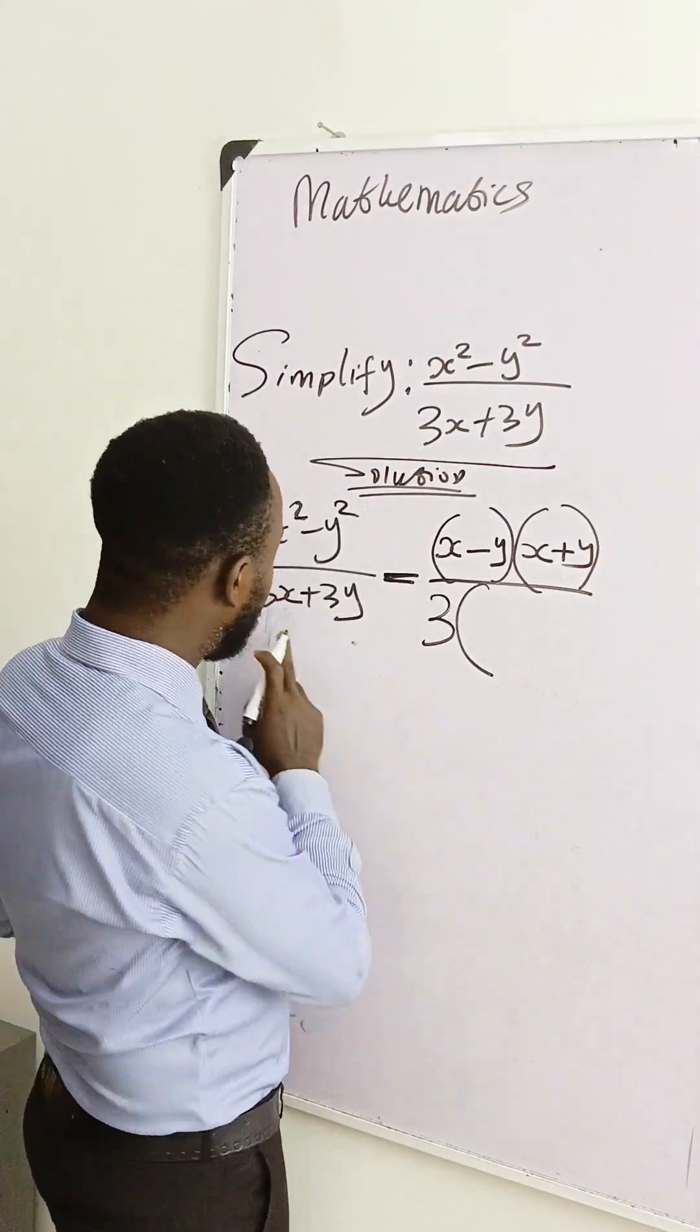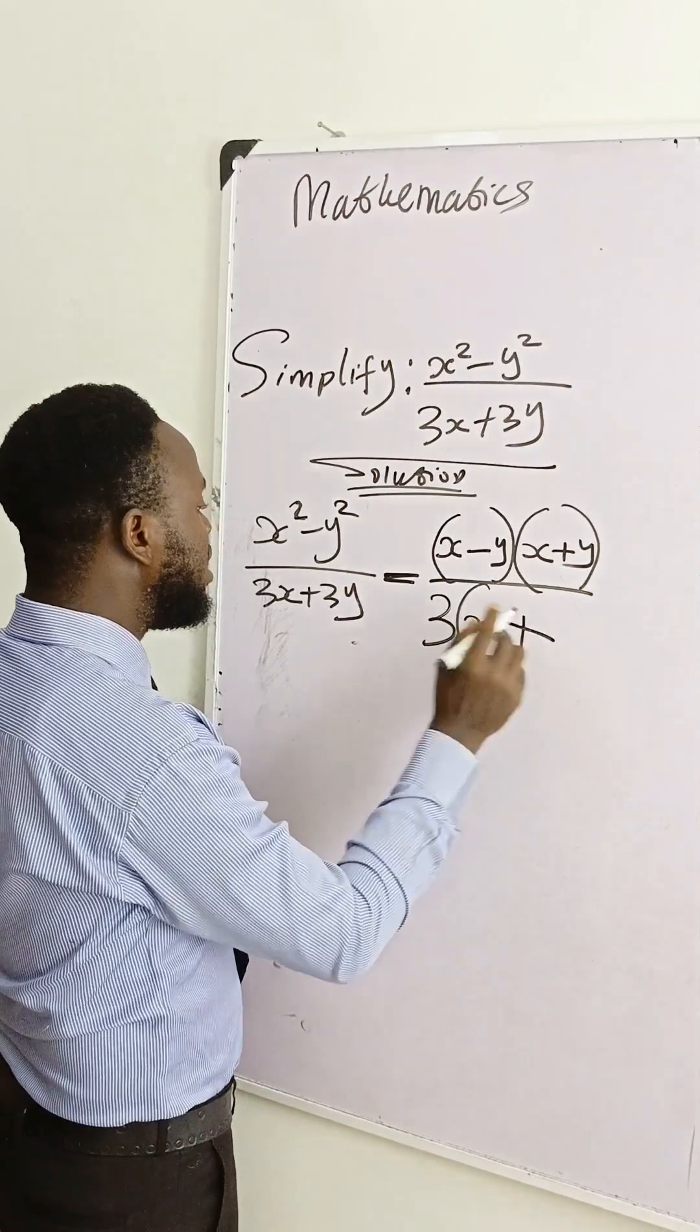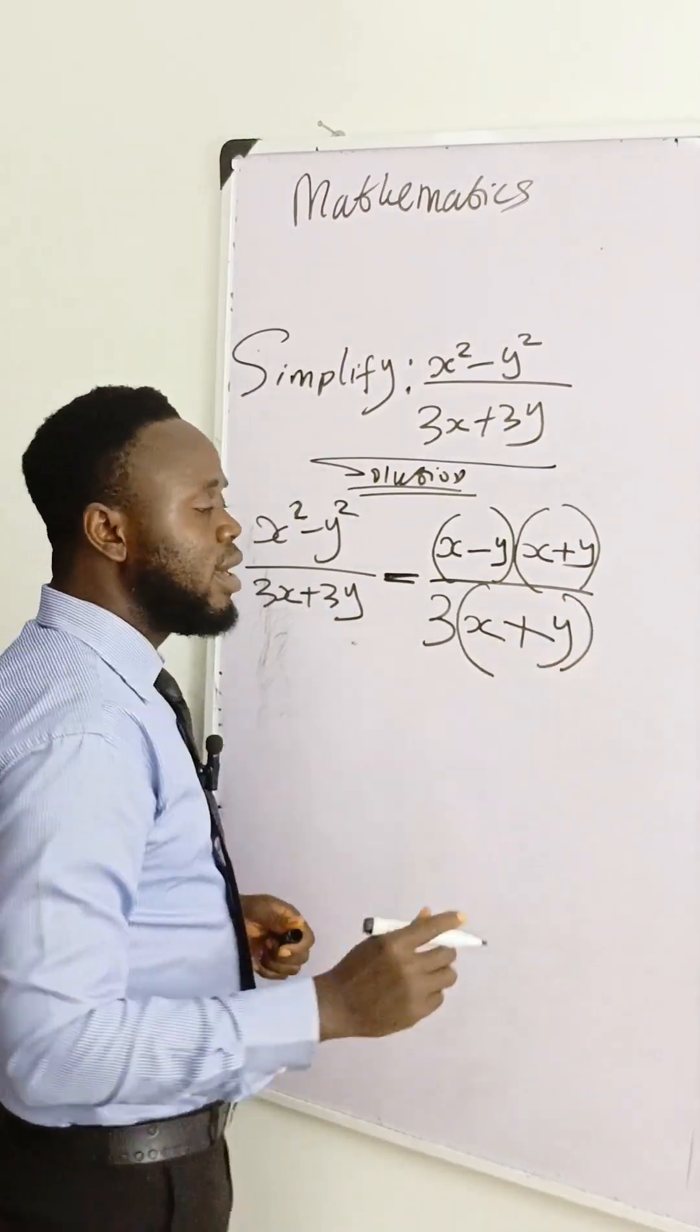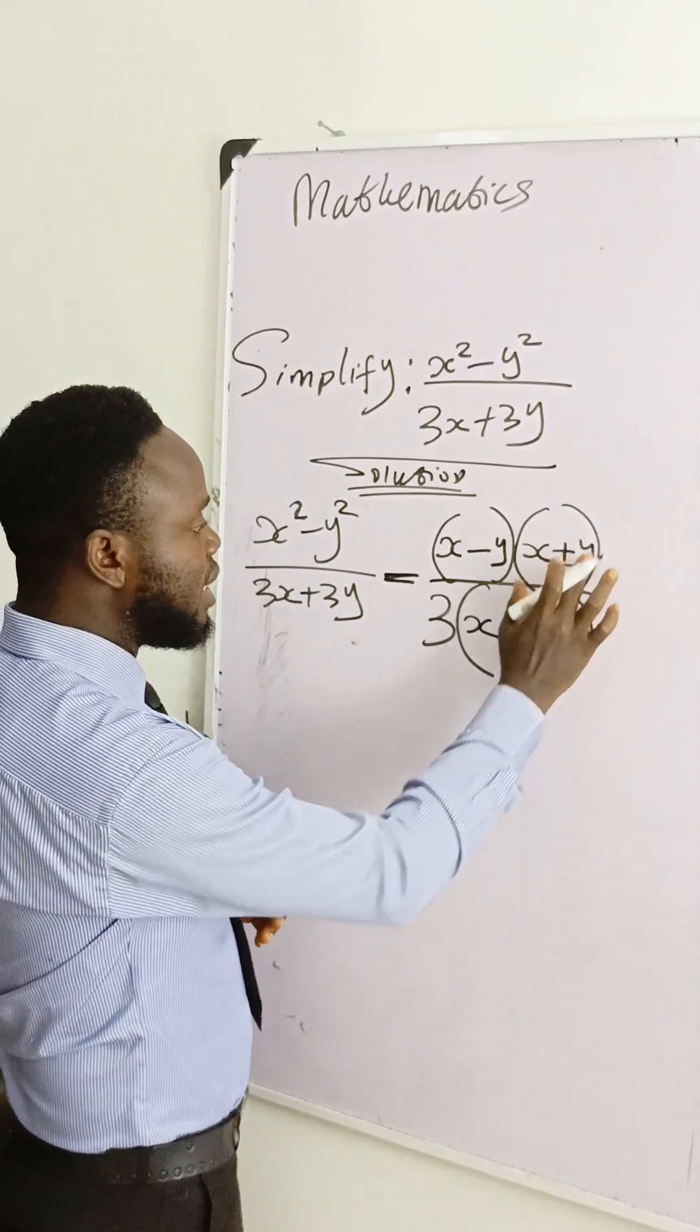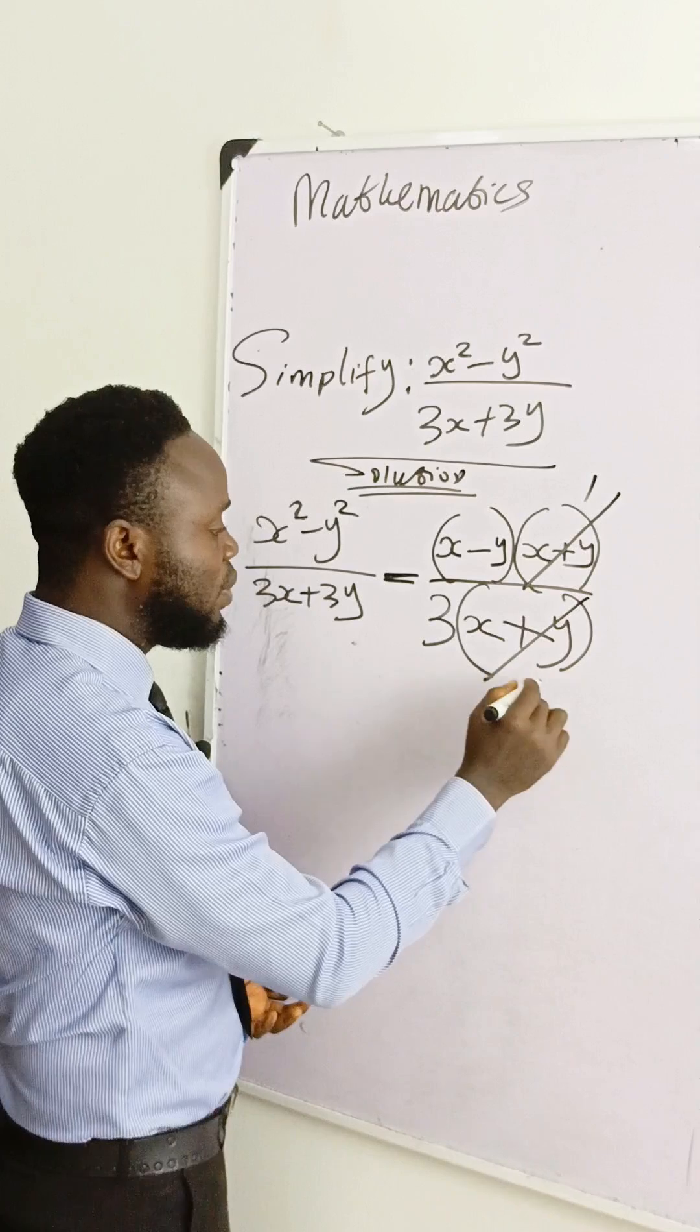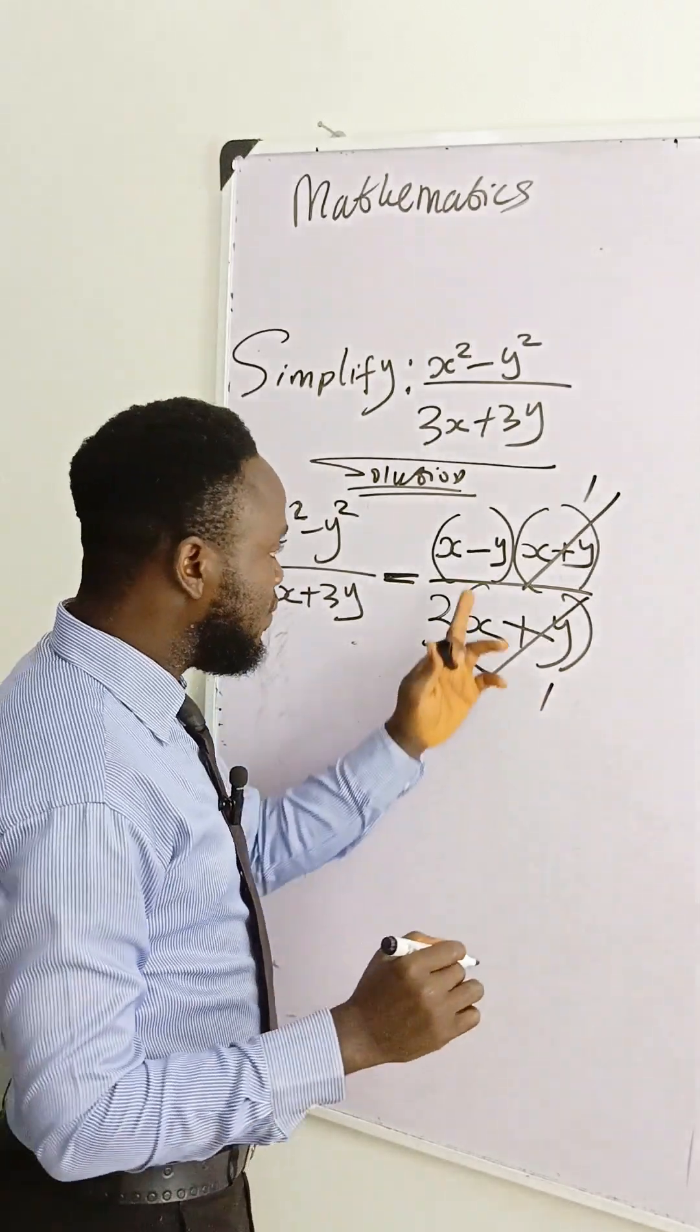If you use 3 to divide 3x, the only thing that remains is x. If you use 3 to divide 3y, you have y. And if you look up here, you can see that these and these are equal, so they can divide each other. This will divide by one, this will divide by one.